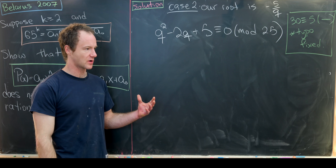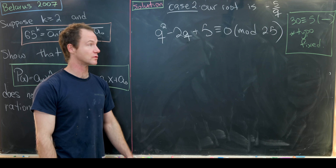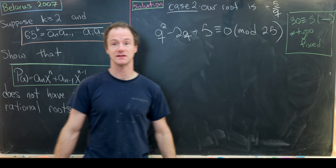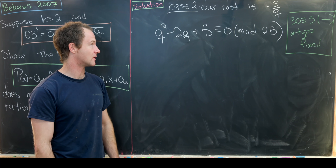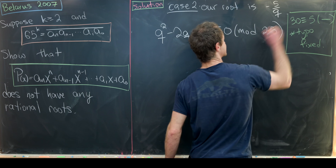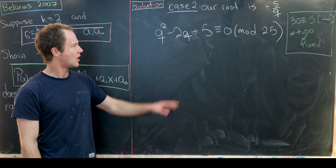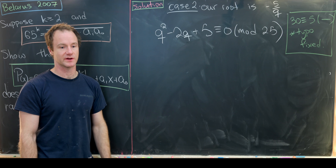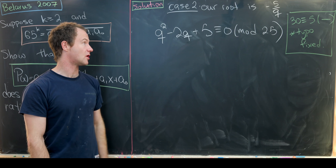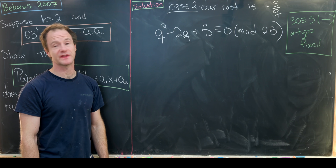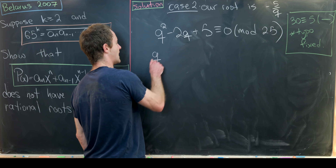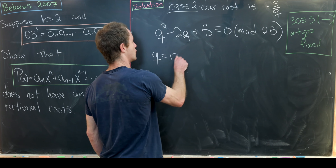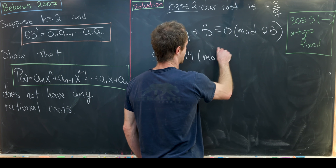To finish, we show q^2 − 2q + 5 ≡ 0 mod 25 has no suitable roots. Checking all values of q from 0 to 24, the solutions are q ≡ 12 or q ≡ 14 mod 25.